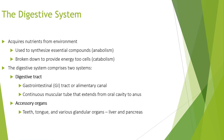The digestive system acquires nutrients from the environment. It is used to synthesize essential components in a process known as anabolism, and is broken down to provide energy to cells in a process known as catabolism. The digestive system comprises of two systems: the digestive tract and accessory organs.